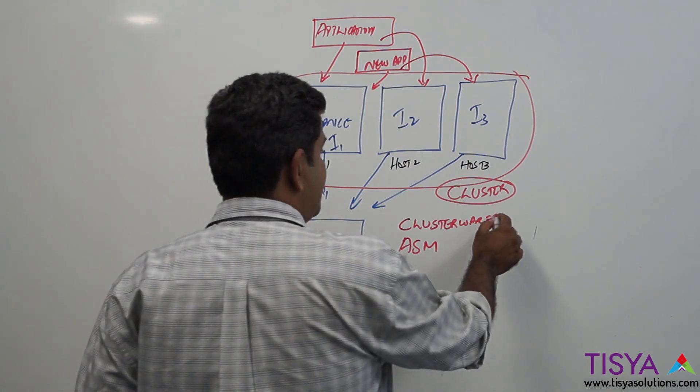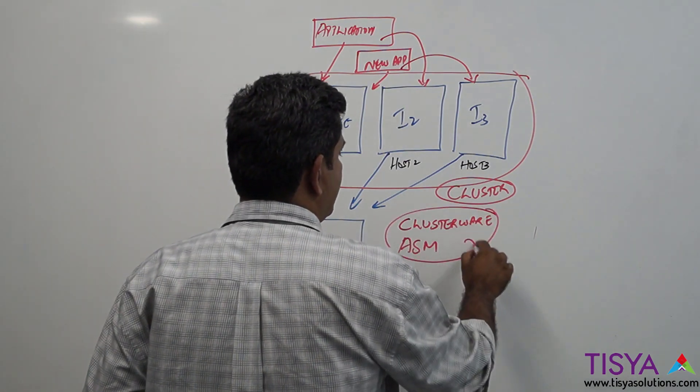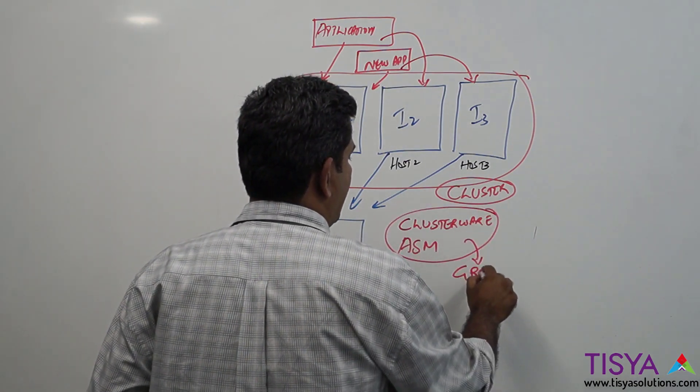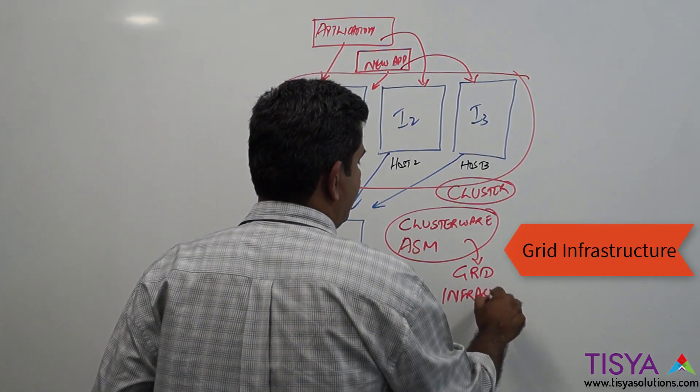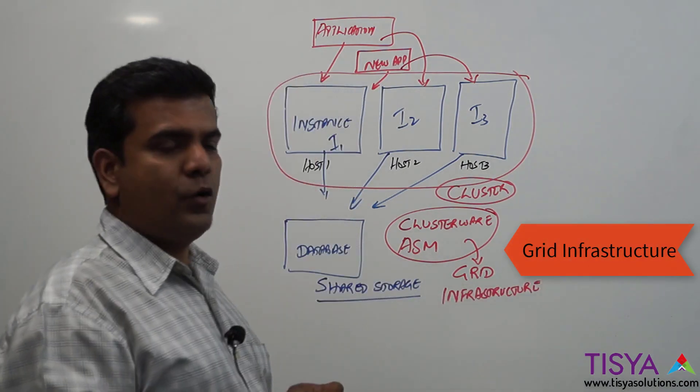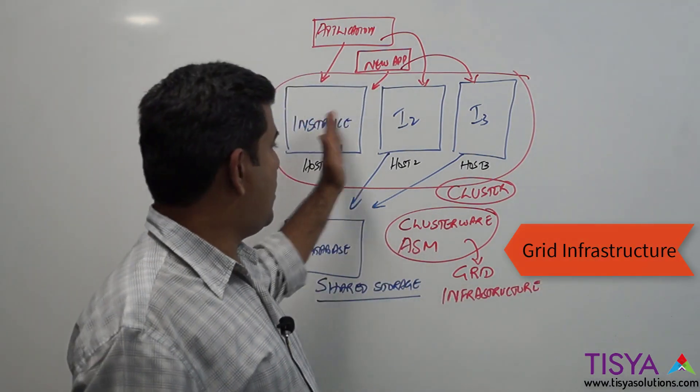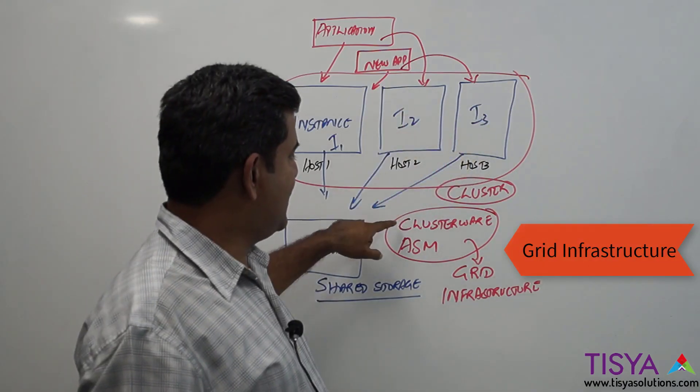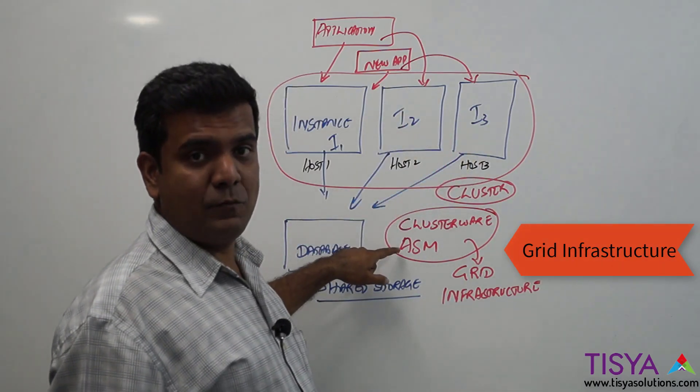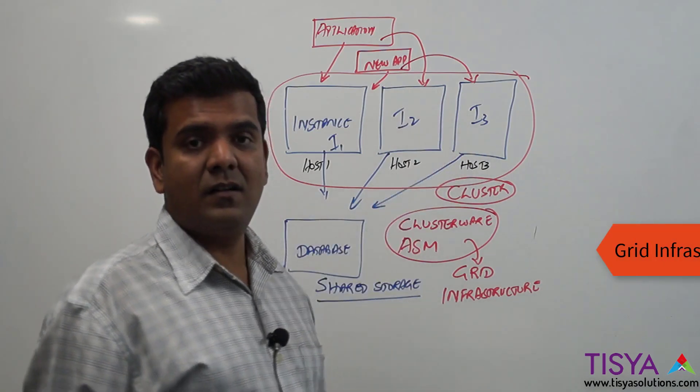Starting 11g onwards, these two together have been called as Grid Infrastructure. So you install Grid Infrastructure on all three nodes, which makes clusterware and ASM to be installed so you can create a cluster and work with it.